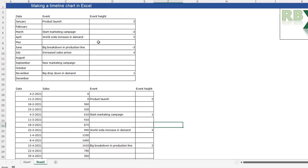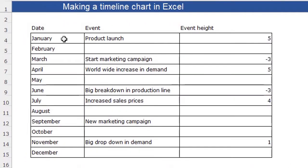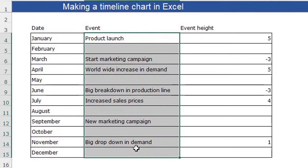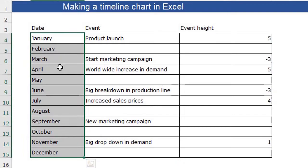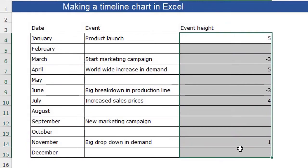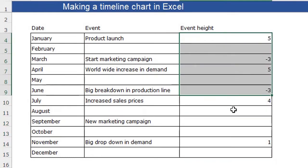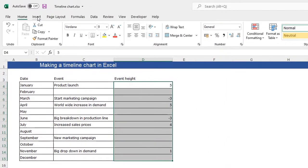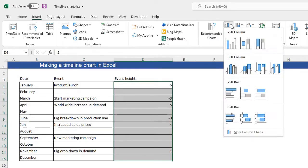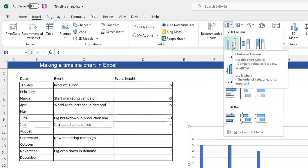For the first chart, you have a table with months on the left, the events in each month — the months can also be days or weeks — and an event height column. I'll explain what the event height does later. To make the chart, just select the event height column, go to your Insert tab, and insert a clustered column chart.